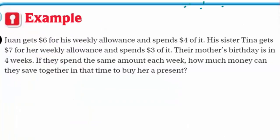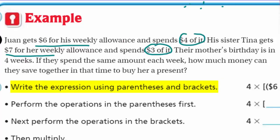New example: Juan gets six dollars for his weekly allowance and spends four dollars of it. His sister Tina gets seven dollars and spends three dollars. Their mother's birthday is in four weeks. How much money can they save together in that time to buy her a present? Juan earns six dollars but spends four - quite a bit compared to Tina who earns seven and spends less.